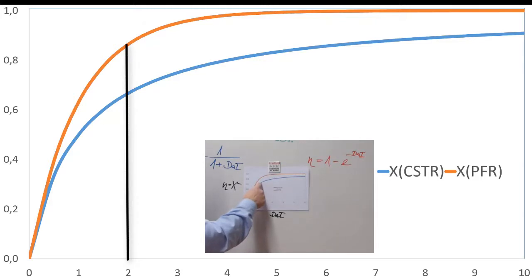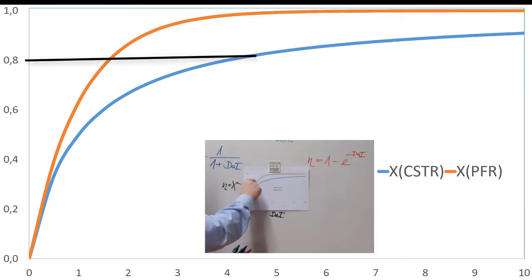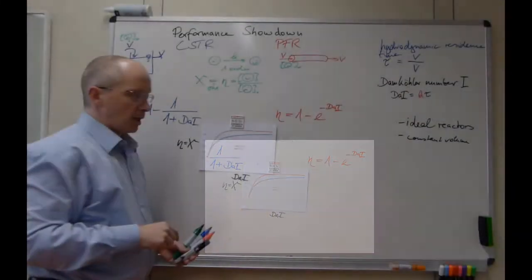It may not look that dramatic, but if you look here at approximately a Damköhler number of two, you get about 65% conversion. But for the PFR, you already get more than 80% conversion. This may make a huge difference.